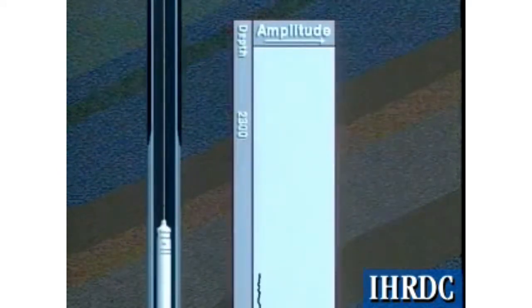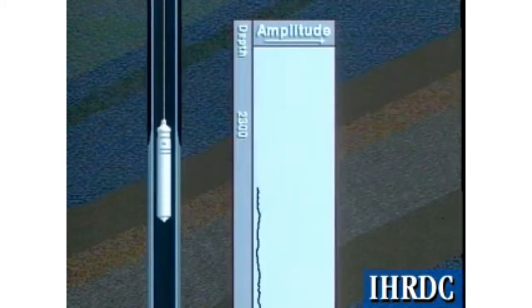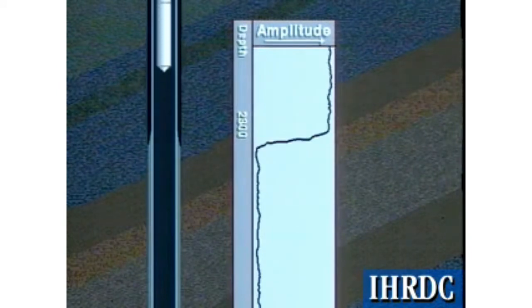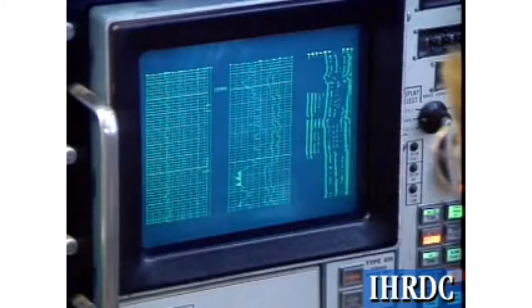The amplitude curve is universally presented on CBLs and typically displays the amplitude of the first signal to arrive at the near receiver. Since this amplitude is for the pipe portion of the signal, a low amplitude indicates good pipe-to-cement bonding, while a high amplitude indicates poor bonding.